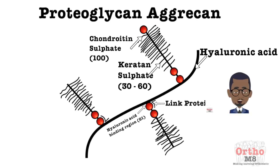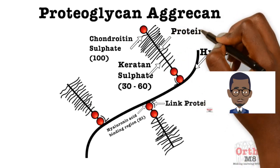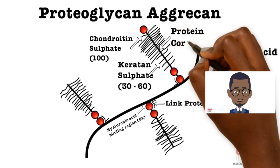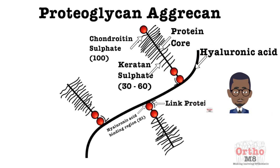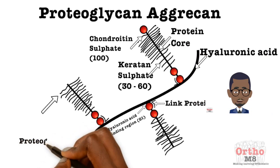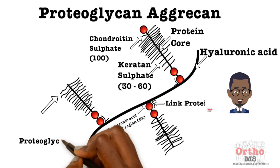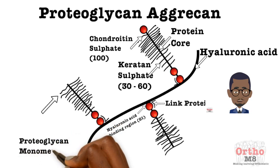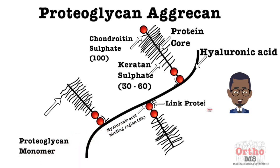Proteoglycans are formed of glycosaminoglycans covalently attached to the core proteins. Aggrecan is one of the most important extracellular proteoglycans. There are two chondroitin sulfate regions: CS1, where the chondroitin sulfate chains are regularly interspaced, and a CS2 region where they are clustered in an irregular fashion.